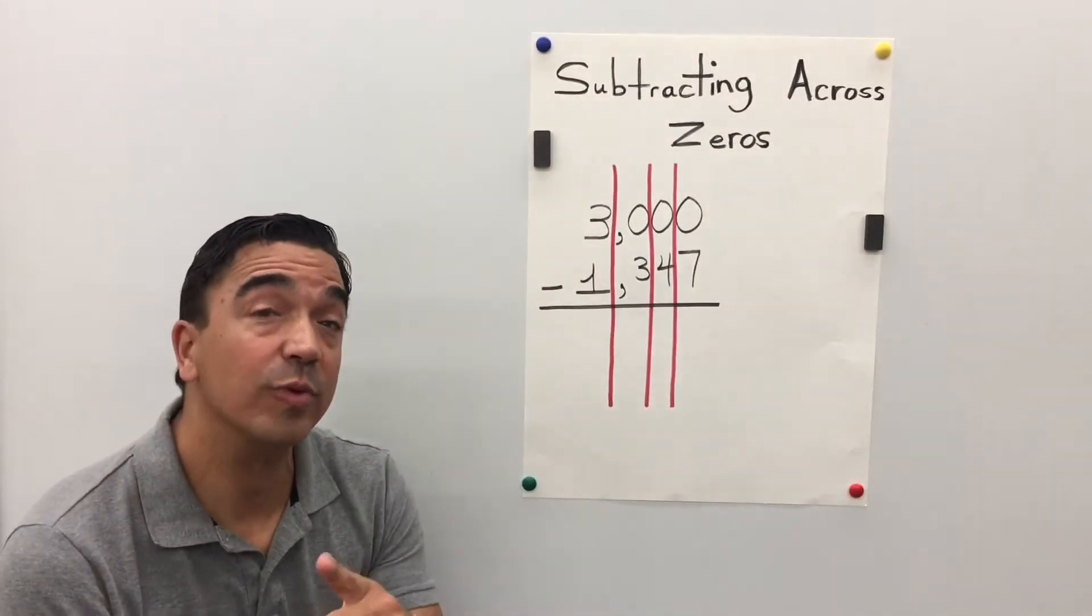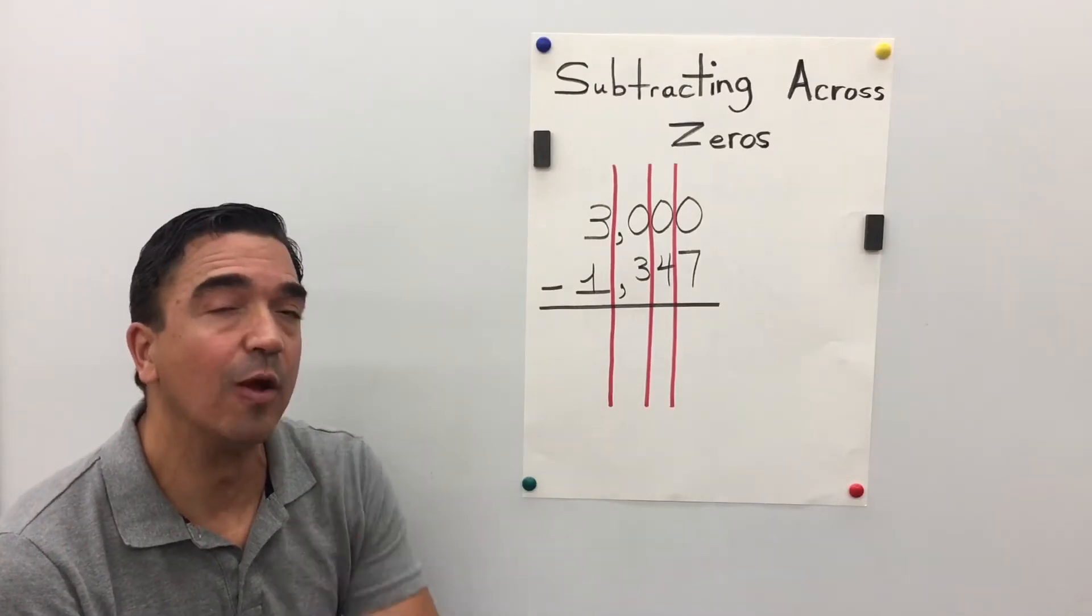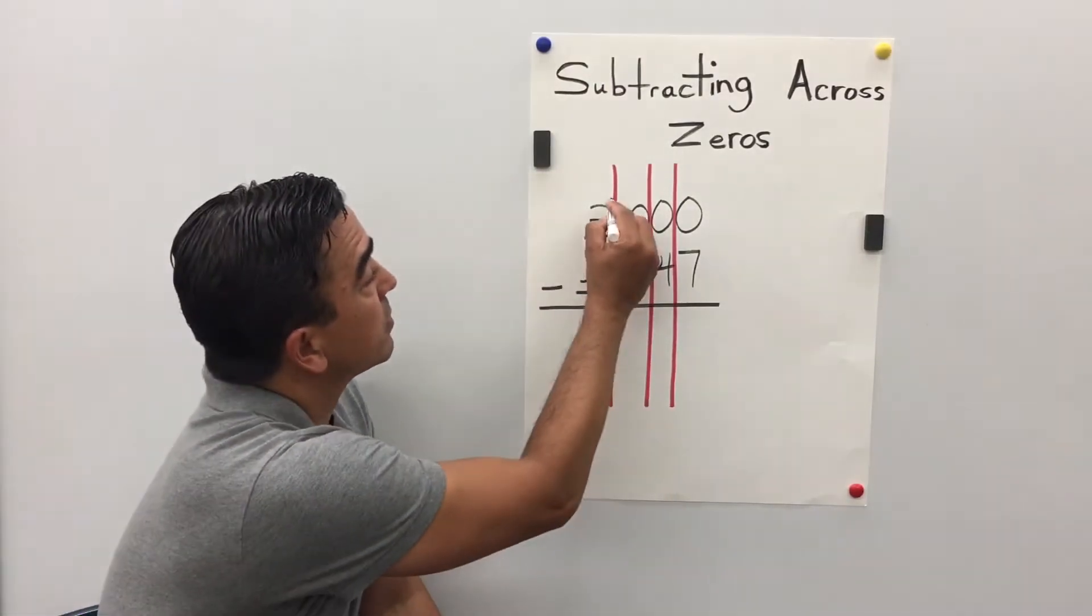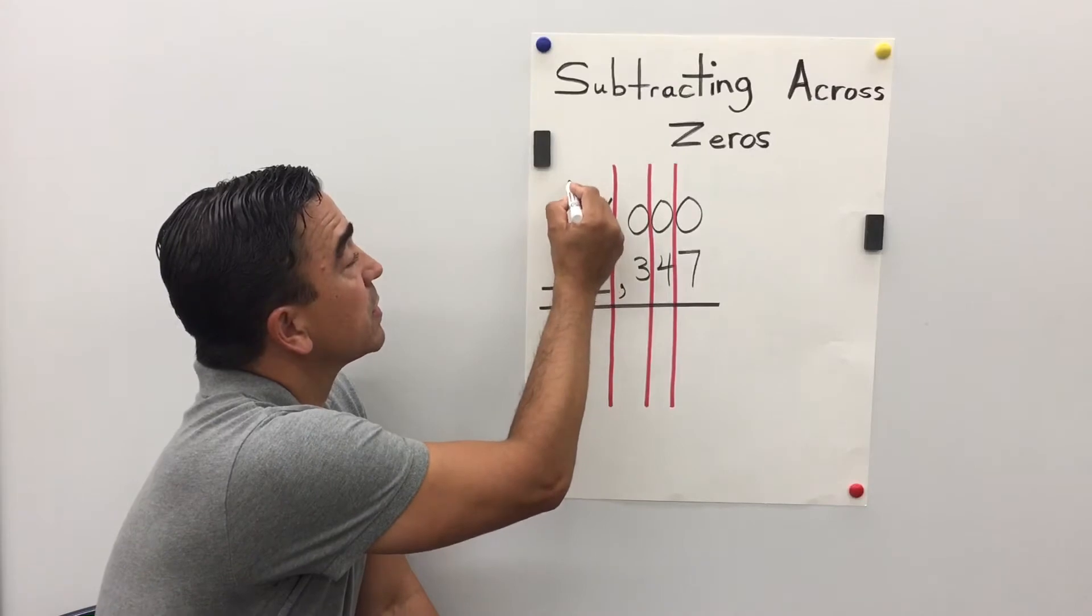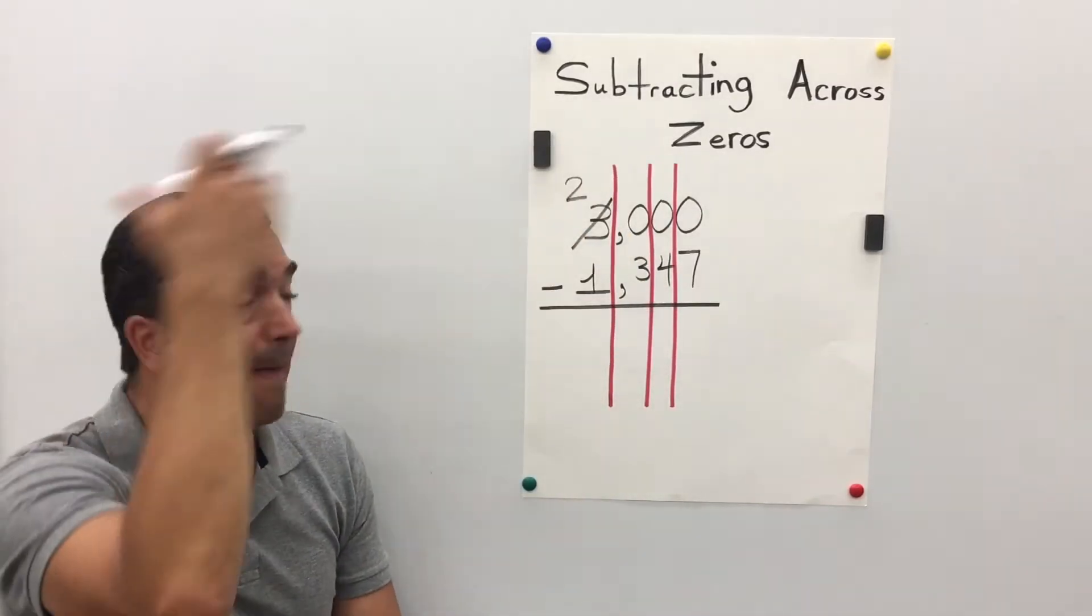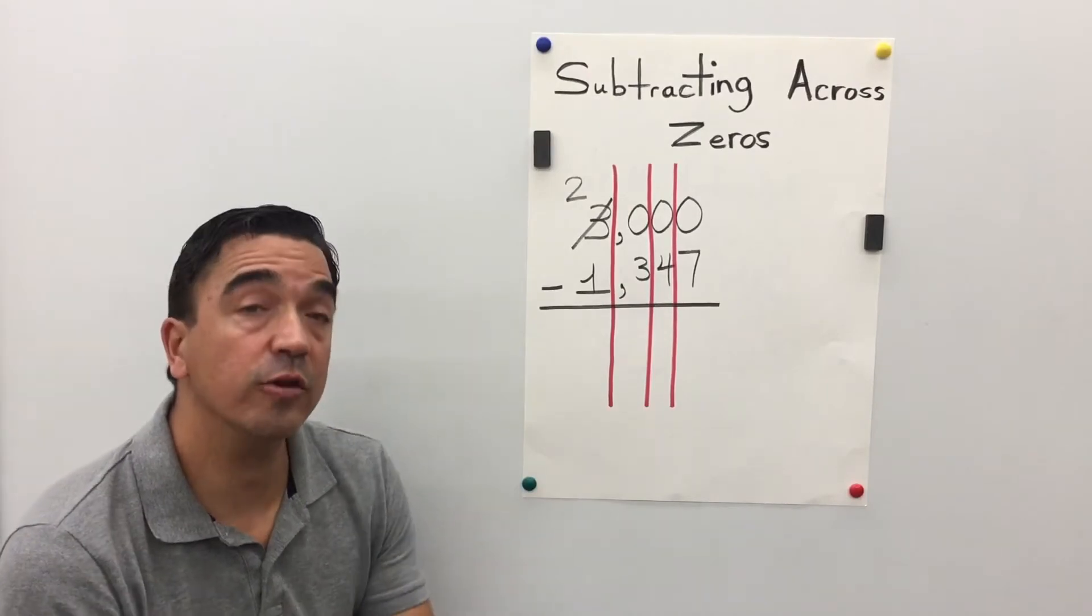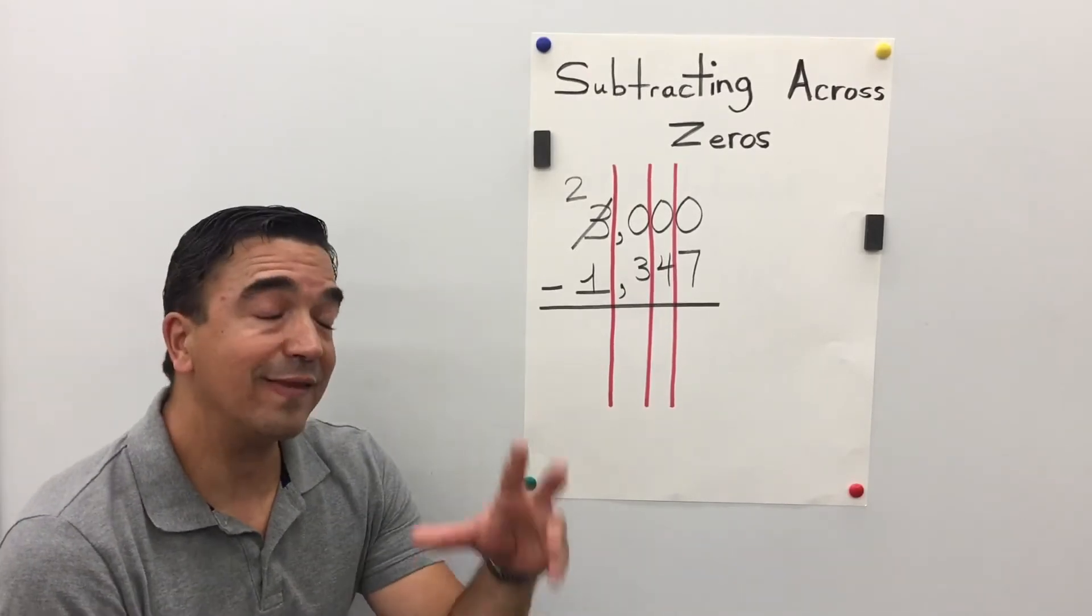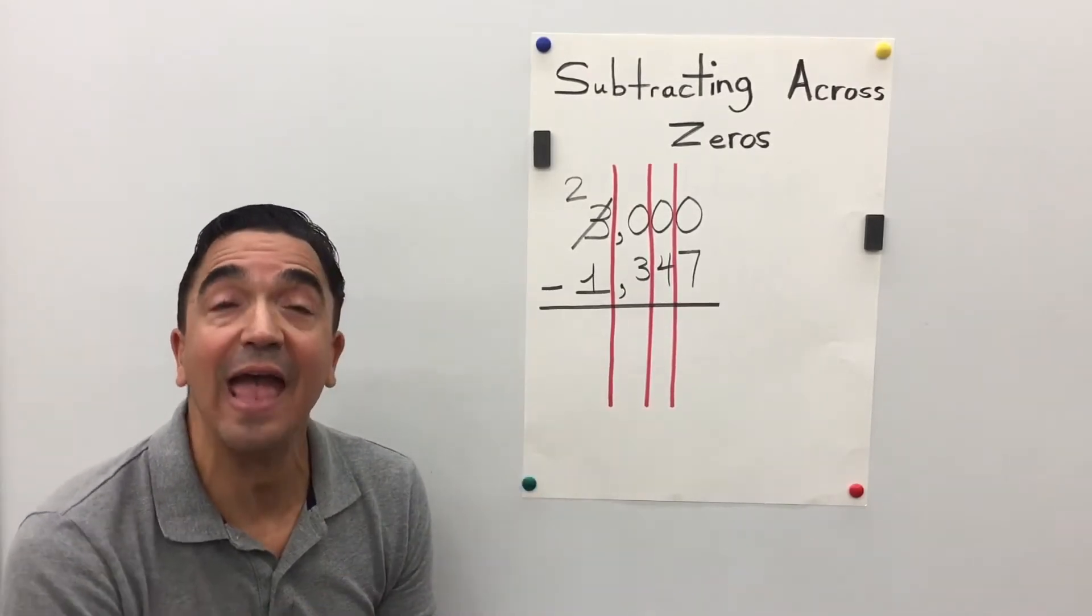Ah, 3,000. Let's take one of those. We're gonna borrow that 1,000 and put it into the hundreds place. We're gonna take that 1,000 and make 10 hundreds.